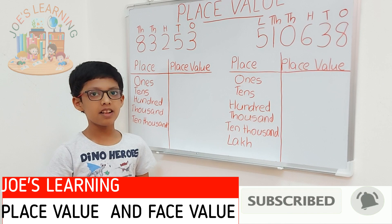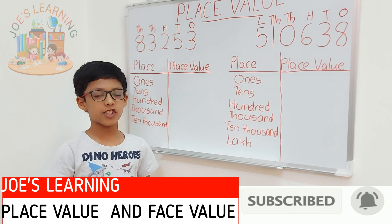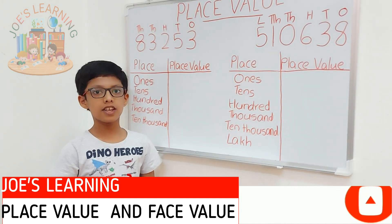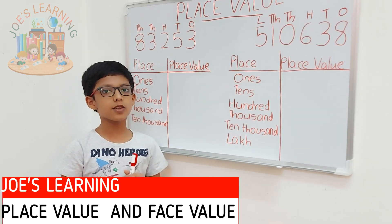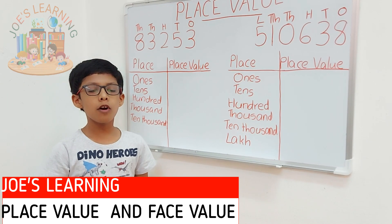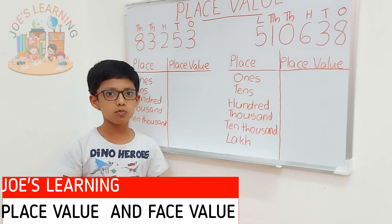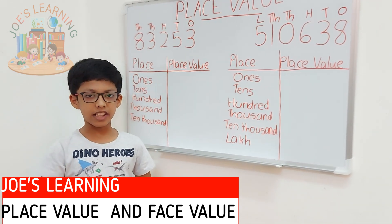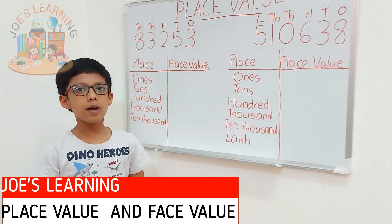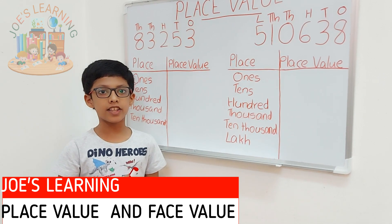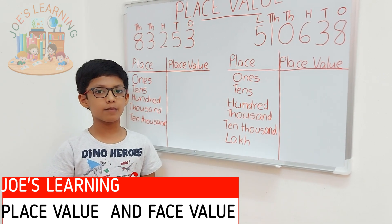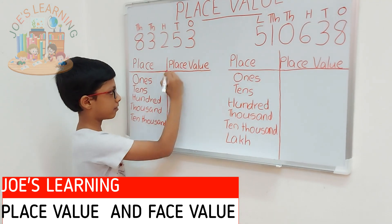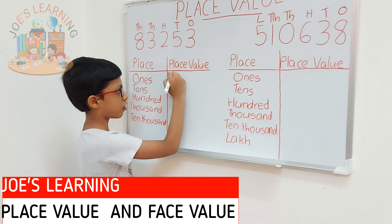In this example, first let's take a look at the one's place. 3 is in the one's place. So, what is the Place Value of 3? It's 3 itself because 3 multiplied by 1 is 3. Now, let's write it down here in the one's column.